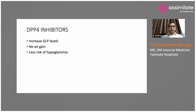Basically, DPP-4 inhibitors are drugs which inhibit the DPP-4 enzyme, thereby increasing the naturally occurring GLP-1 in our body, which enhances insulin secretion. They act at various pathophysiological defects and reduce sugar levels.